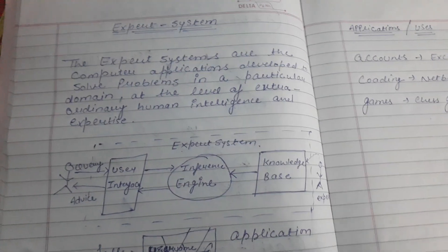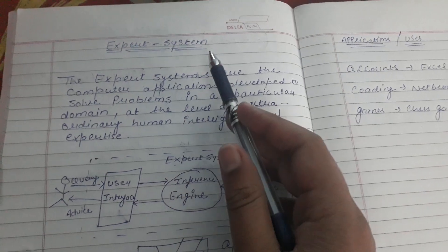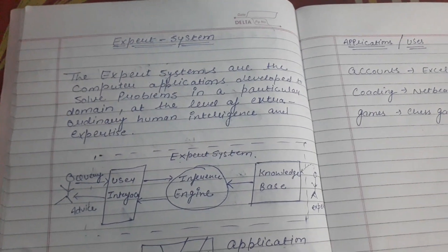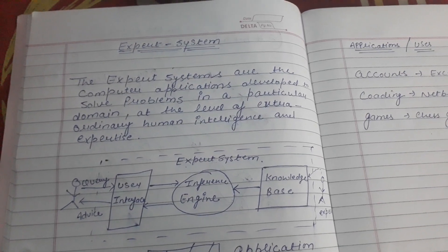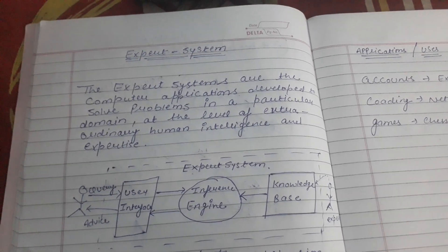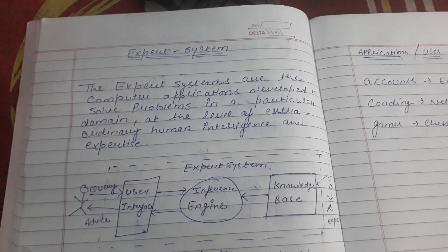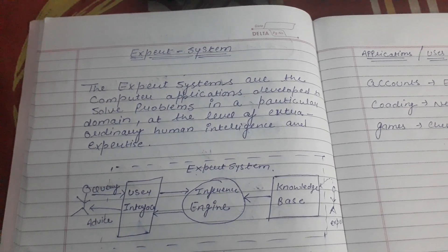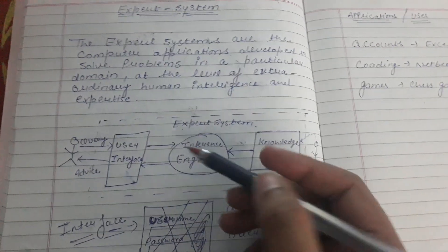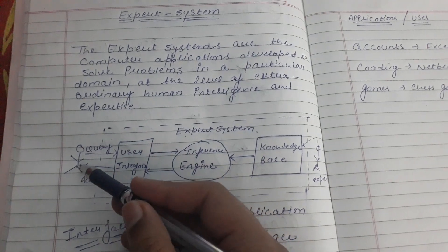Hello, today we are discussing the expert system. An expert system is an application that is used basically for finding the solutions to user problems in artificial intelligence. Let's discuss according to the diagram.